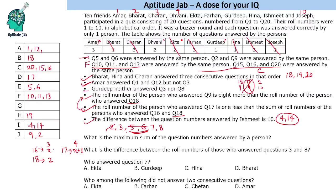After filling Ekta, the remaining question numbers are 3, 7, and 8. Gurdeep neither answered question 3 nor question 8, so Gurdeep answered question 7.